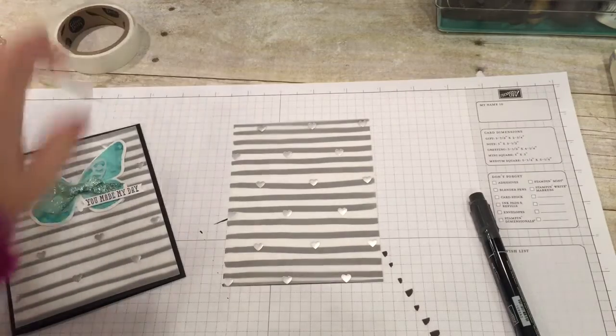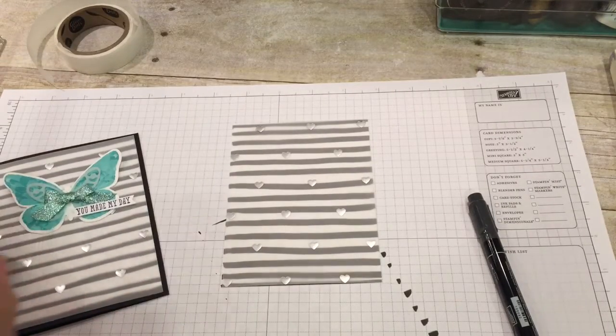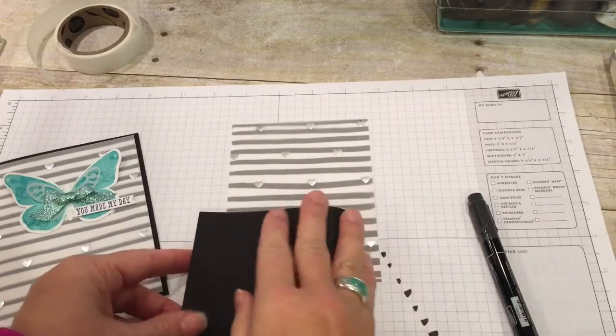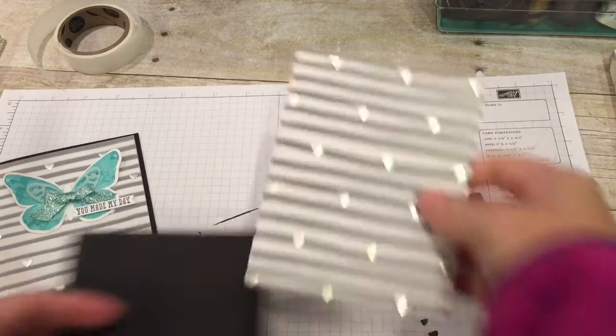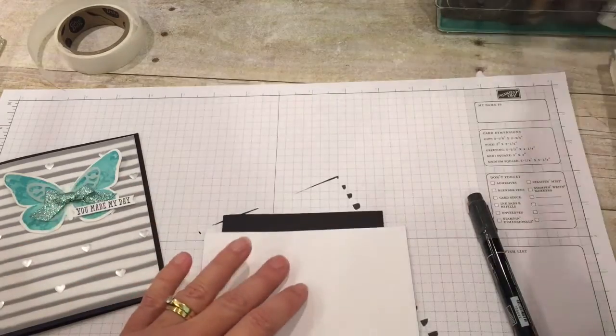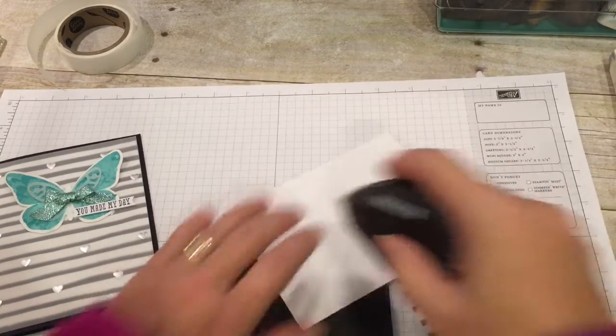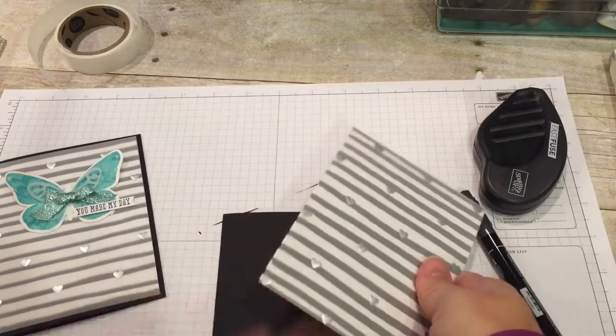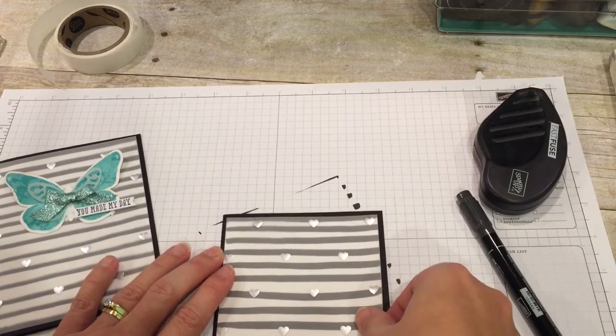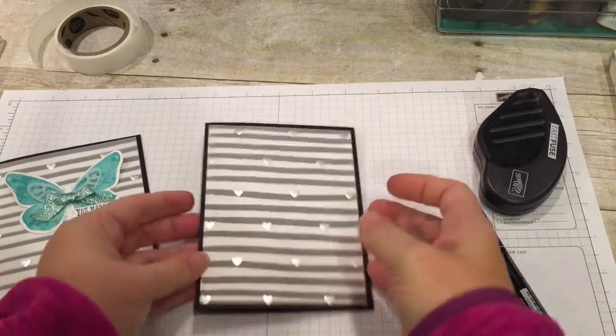Then I will go ahead and attach this to my black card. And of course I can put an insert on the inside of my card that's white so that people can actually write in it. So I'm just going to attach this with some fast fuse. Center it up and oh so pretty.